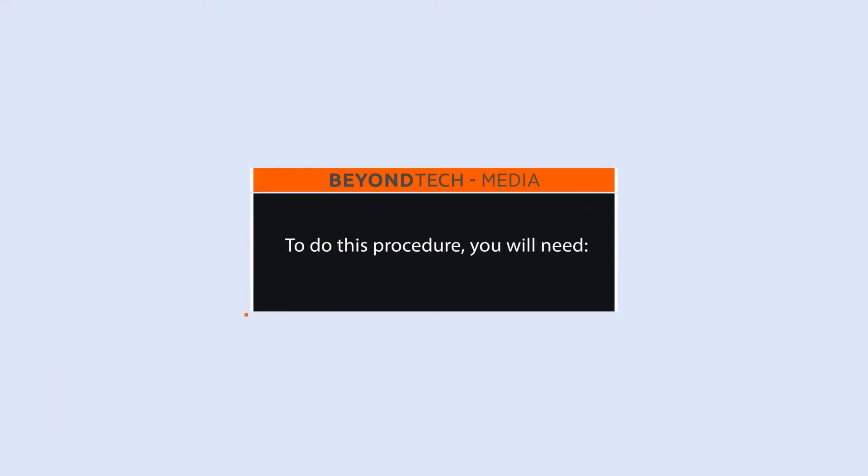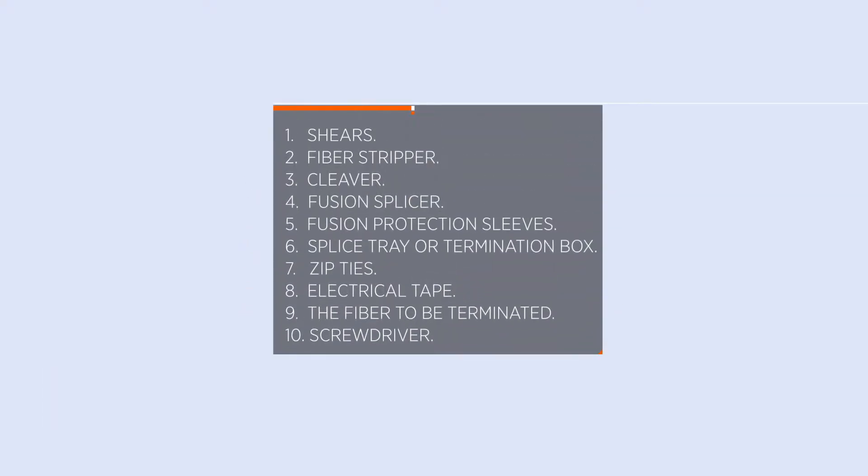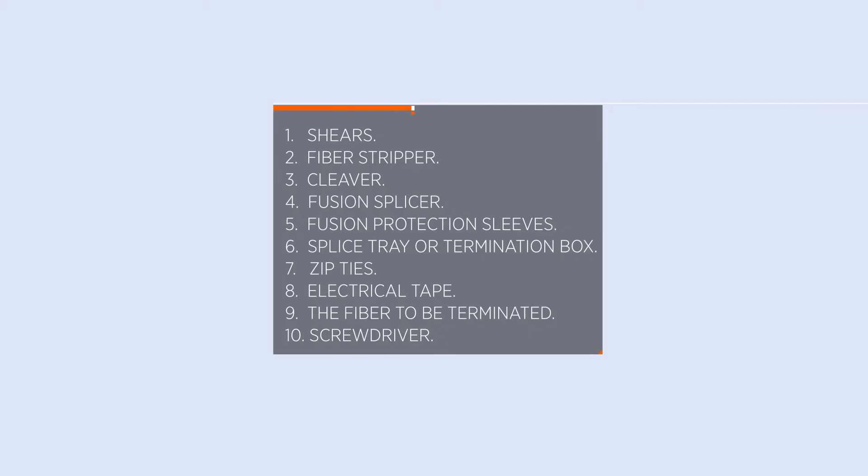To do this procedure, you will need shears, fiber stripper, cleaver, fusion splicer, fusion protection sleeves, splice tray or termination box, zip ties, electrical tape, the fiber to be terminated, and a screwdriver.